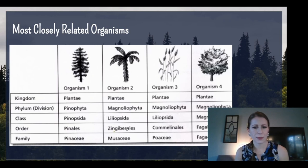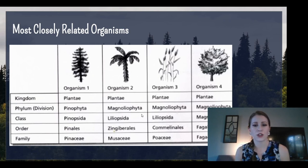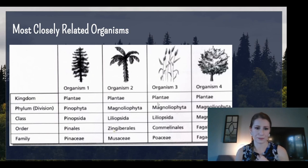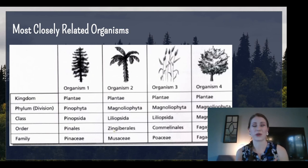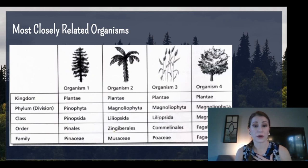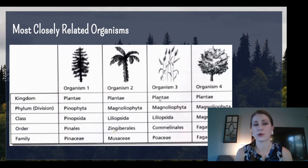They have different orders, but they have the same class. So we can say organism 2 and 3 are the most closely related. They all have different families and different orders, so those categories wouldn't help us. But when we look at class, those are the only two that share a class, phylum, and kingdom — showing us they're the most closely related out of this group.